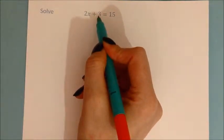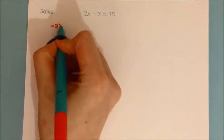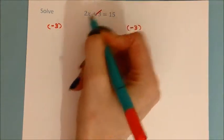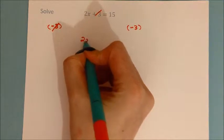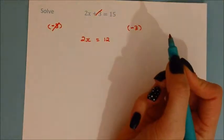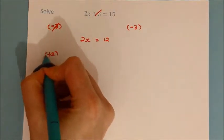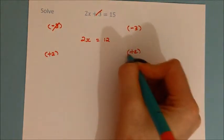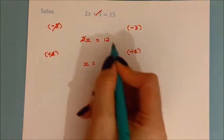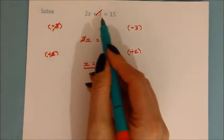The last thing I did was add 3, so I need to take away 3 from both sides. That cancels out, leaving 2x on the left and 12 on the right. I now want to get x on its own — it's been multiplied by 2, so I divide by 2. 2x divided by 2 cancels out, leaving just x, and 12 divided by 2 is 6. So the solution to 2x plus 3 equals 15 is x equals 6.